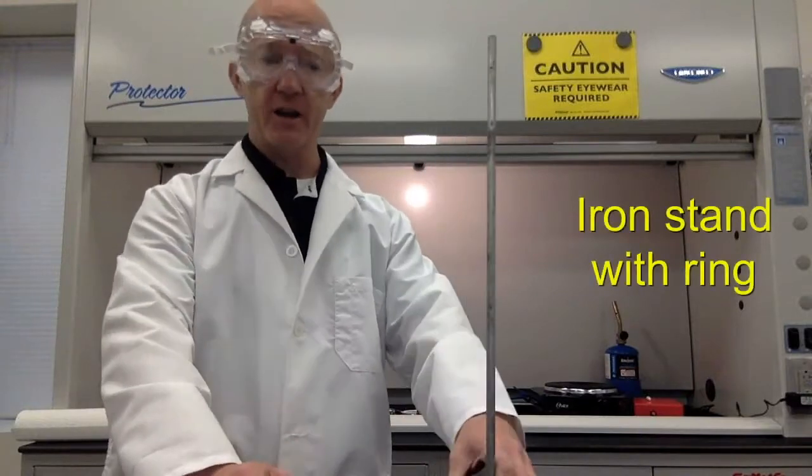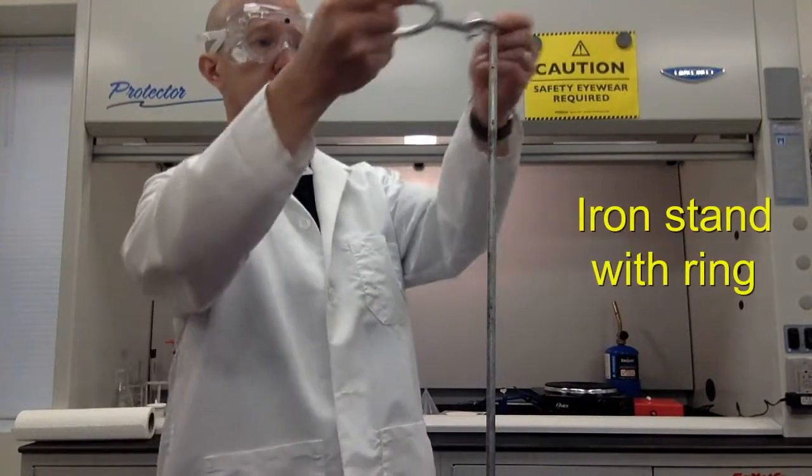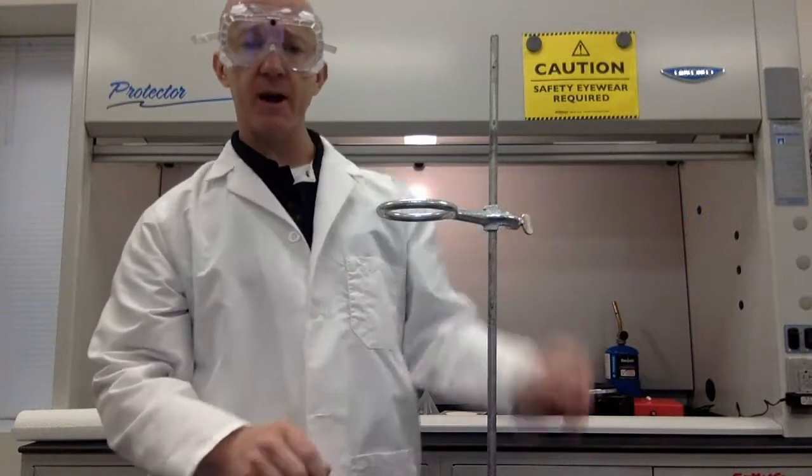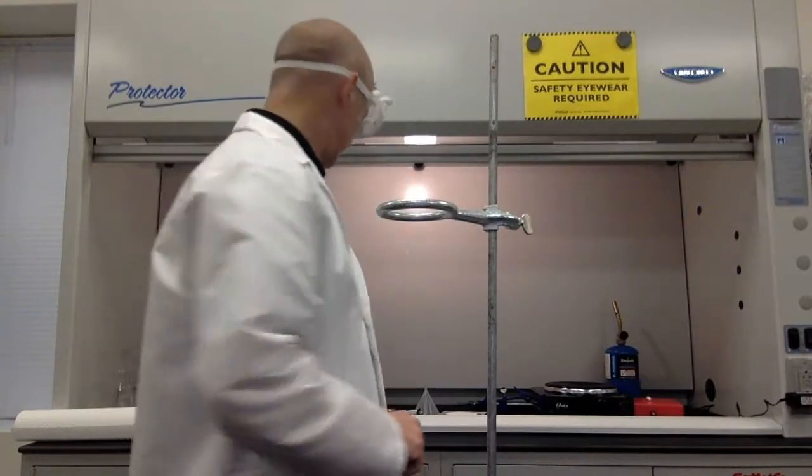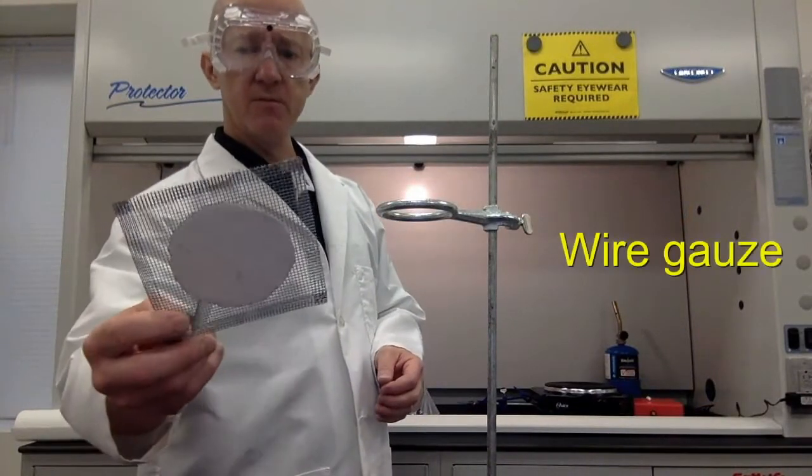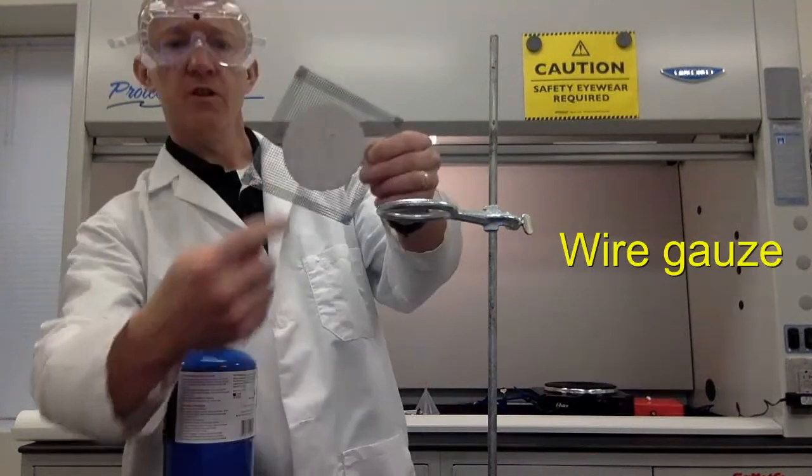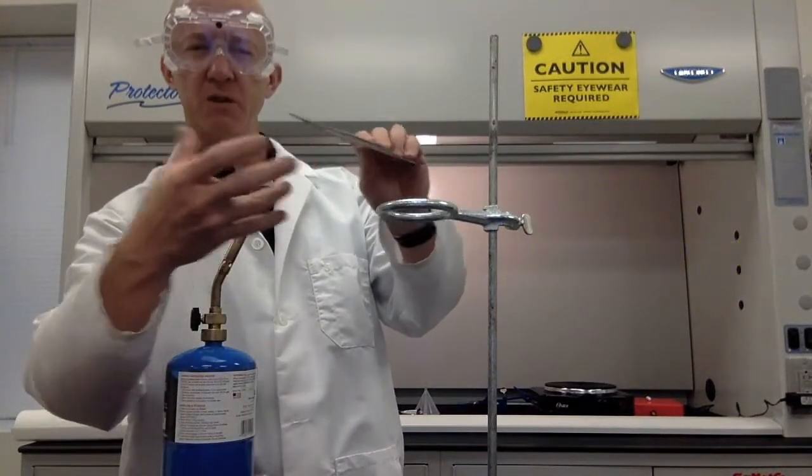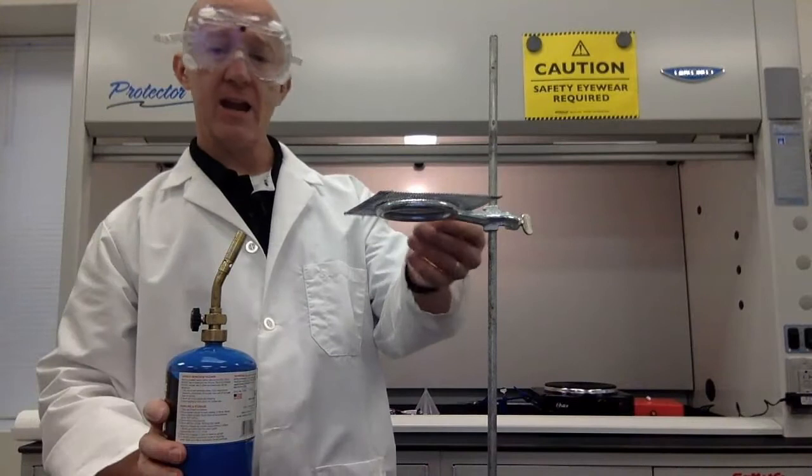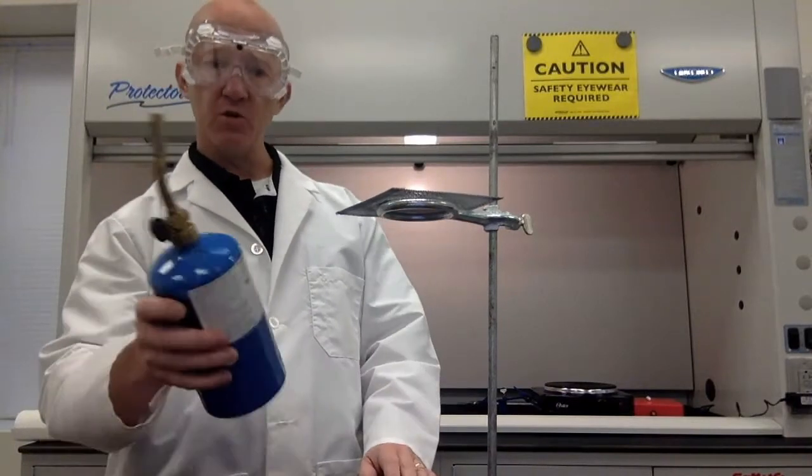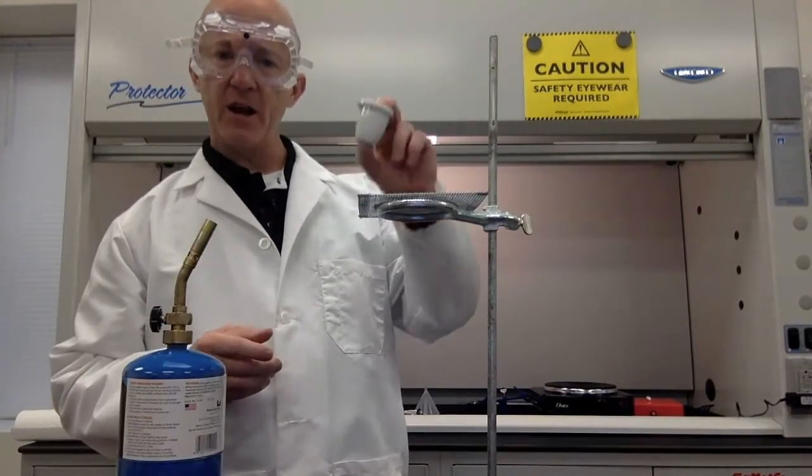This is an iron stand. And this is an iron ring. You simply clamp the iron ring onto the stand like this. And then you might use something like this. This is called wire gauze. This material in the center allows for the heat to be distributed a little more evenly. And it's also fireproof. So we can use things like a torch. Sometimes though, if we're heating a crucible, the wire gauze doesn't exactly do what we need it to do.